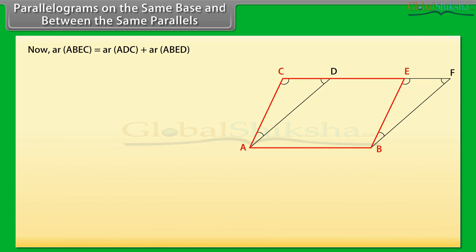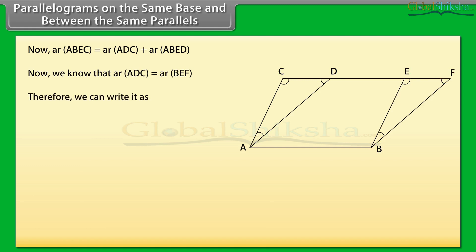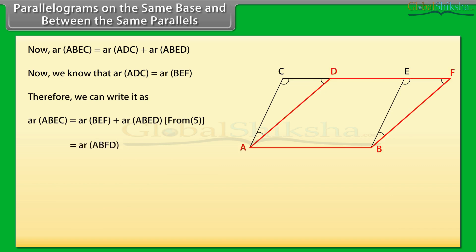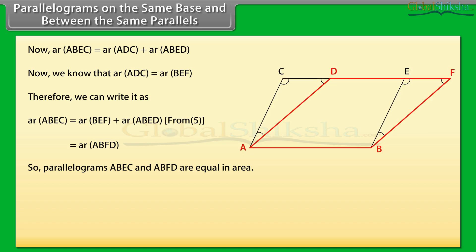Now, area of ABEC equals area of ADC plus area of ABED. We know that area of ADC equals area of BEF. Therefore, we can write area of ABEC equals area of BEF plus area of ABED from step 5, which equals area of ABFD. So, parallelograms ABEC and ABFD are equal in area.